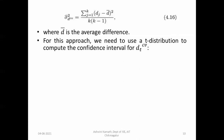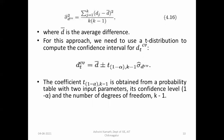For this approach, we use the T-distribution to compute the confidence interval for Dt_cv: Dt_cv = D_bar ± T_{1-alpha, K-1} * sigma_Dcv_cap. The coefficient T_{1-alpha, K-1} is obtained from the T-distribution probability table with two parameters: confidence level (1 - alpha) and degrees of freedom (K - 1).